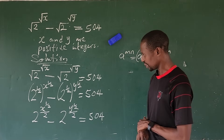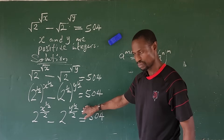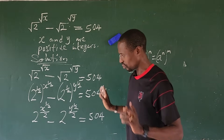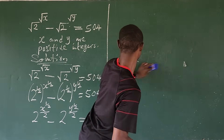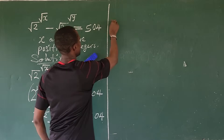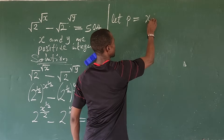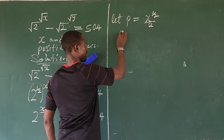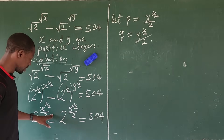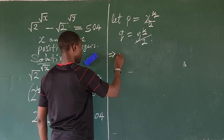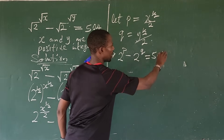At this point we cannot directly subtract these quantities, so we bring in substitution variables. Let p equal x to the power of 1/2, all over 2, and let q equal y to the power of 1/2, all over 2. Substituting into the expression, this now implies that 2 to the power of p, minus 2 to the power of q, equals 504.